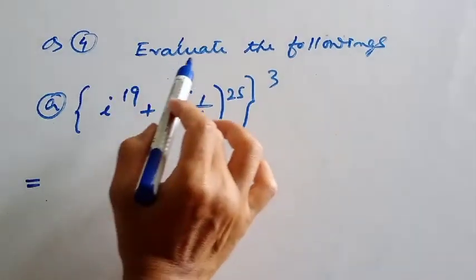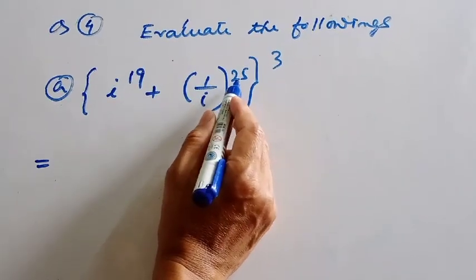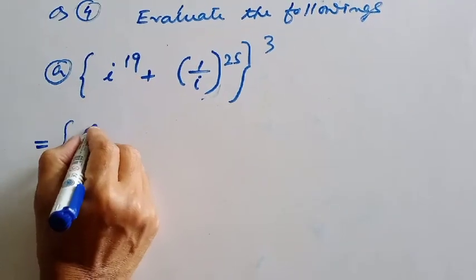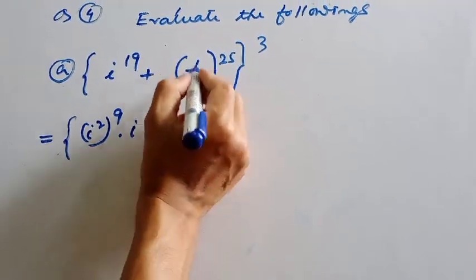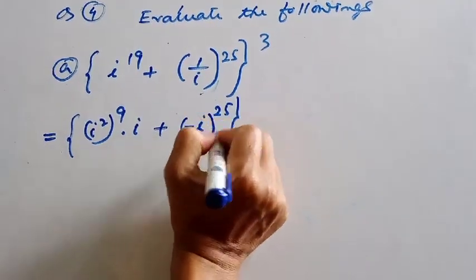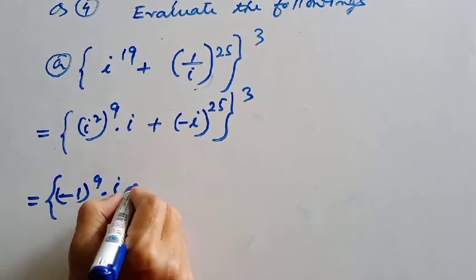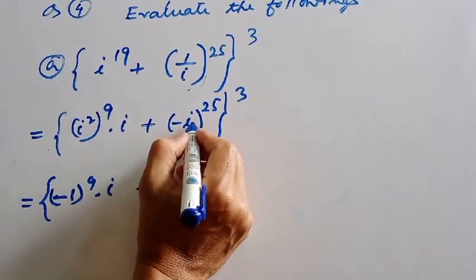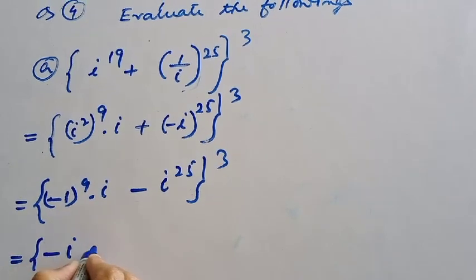Question number 4: evaluate i to the power 19 plus 1 by i whole to the power 25, all cubed. First, i to the power 19: since 2 times 9 equals 18, i to the power 18 plus 1 gives i. For 1 by i, that equals minus i. Then minus i to the power 25: since 25 is odd, this is minus i.